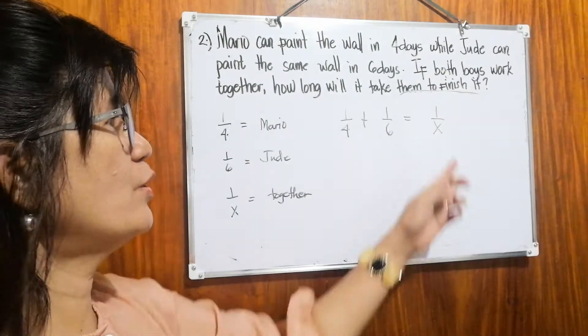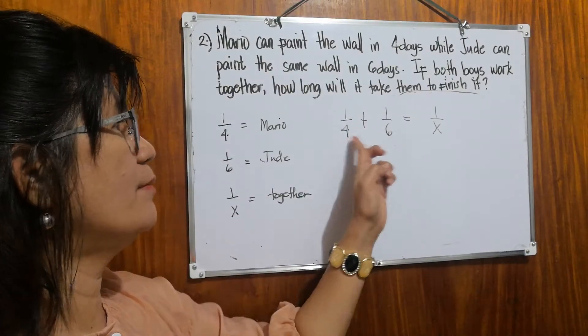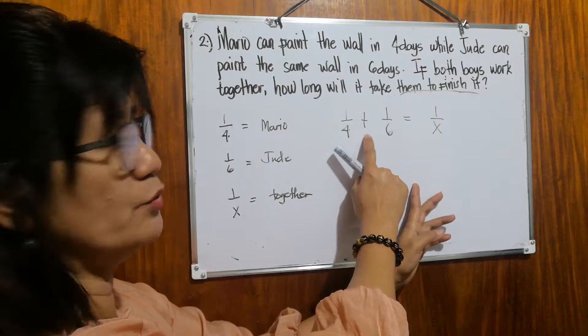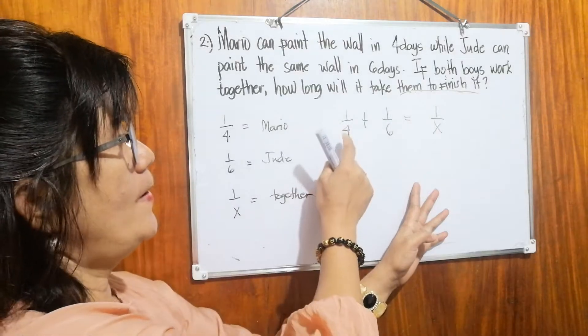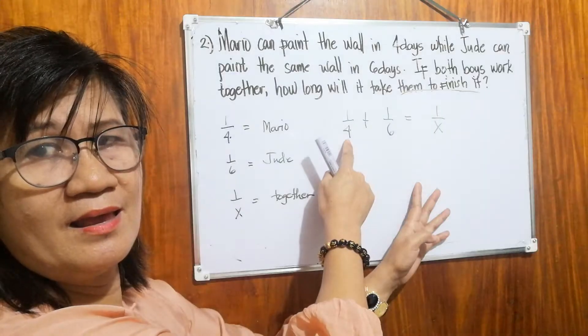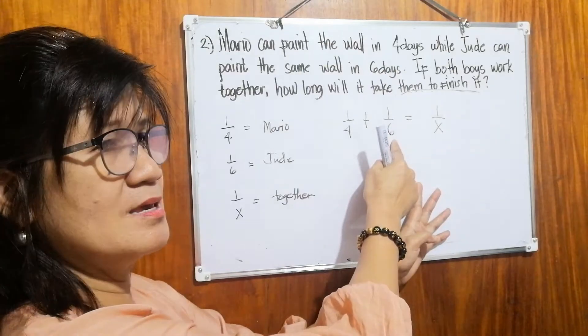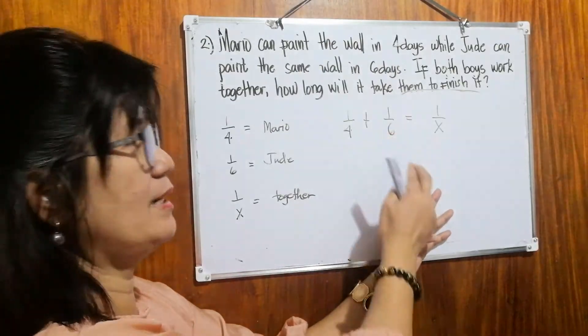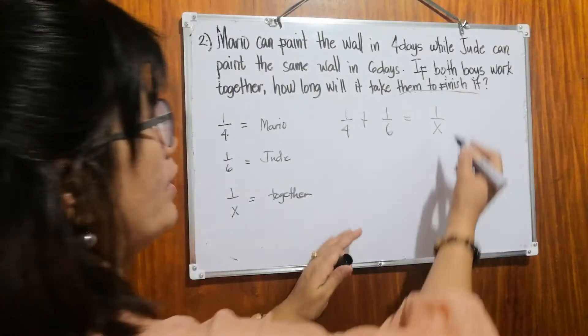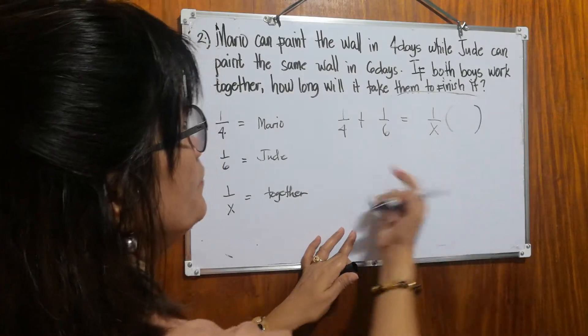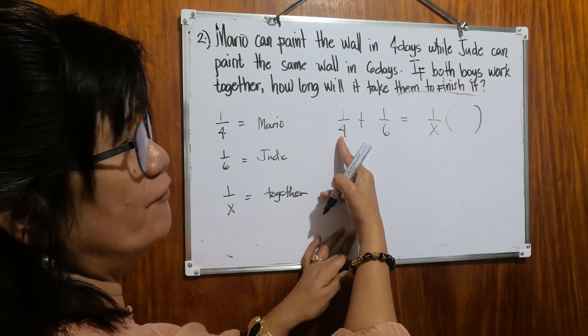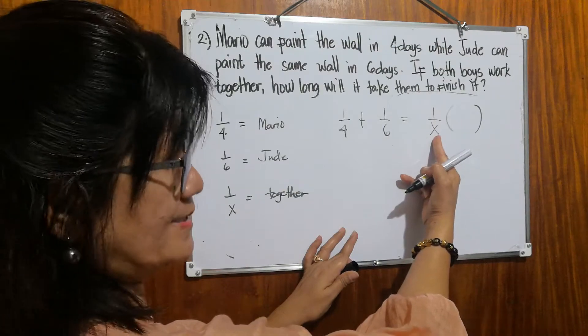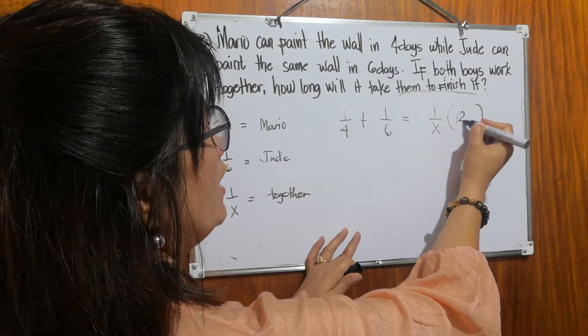To find x, we're going to find the least common denominator. So you'll notice we add the speed of Mario plus the speed of Jude, combining them together. How many days? So let's find the least common denominator of four, six, and x. And that is equal to 12x.